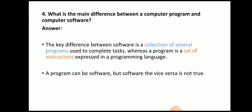What is the main difference between a computer program and computer software? Software is a collection of several programs used to complete a task, whereas a program is a set of instructions expressed in a programming language. A program can be software, but the vice versa is not true.